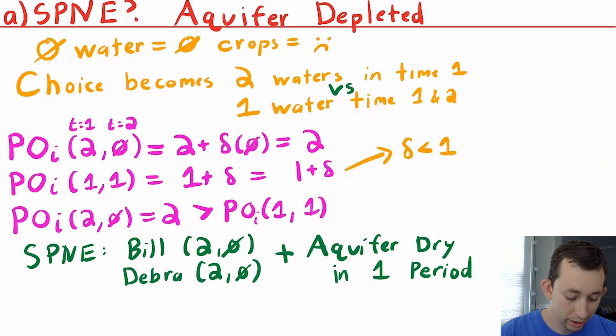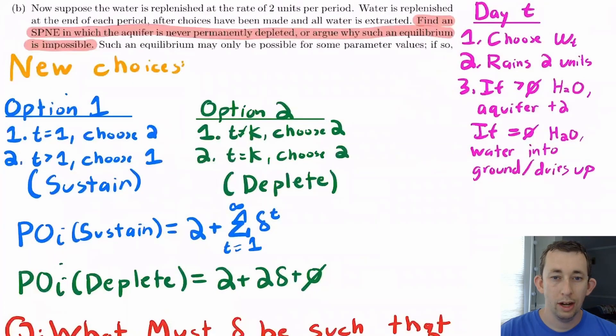Because there's no world in which pulling one unit of water today and one unit of water tomorrow is better just for the person on their own, whether or not you take in the other person's action into account. There's no world in which one and one is greater than two and zero, because of this discount factor being less than one. So both people prefer to take two units out today and zero tomorrow. That's a dominant strategy for both of them. So that is what happens. And you can see again, just by thinking about the game ahead of time, we sort of knew that was going to happen. And we just needed to mathematically show that.